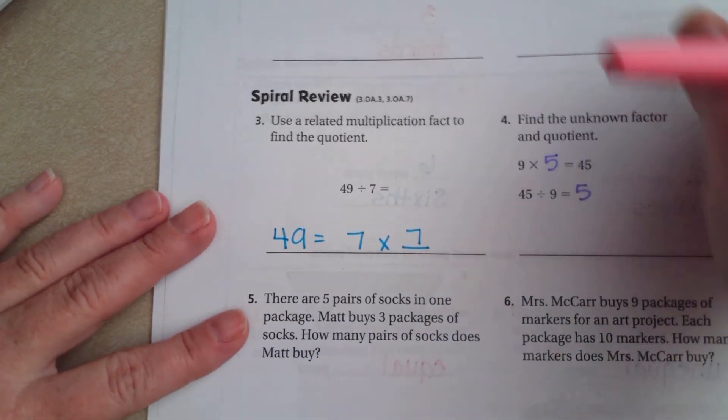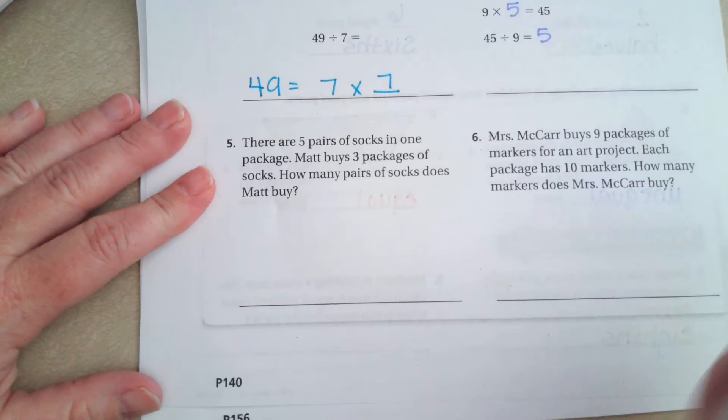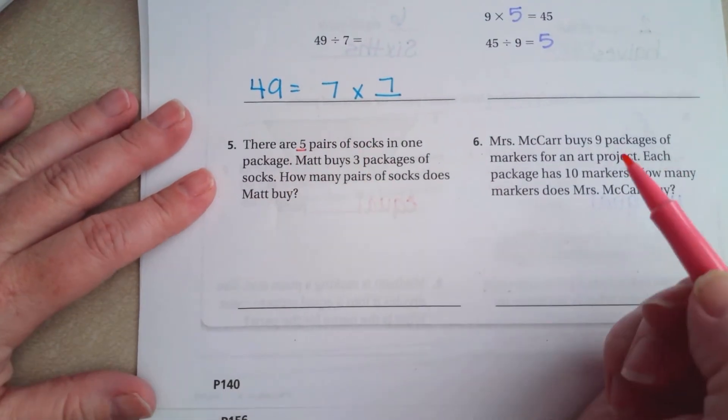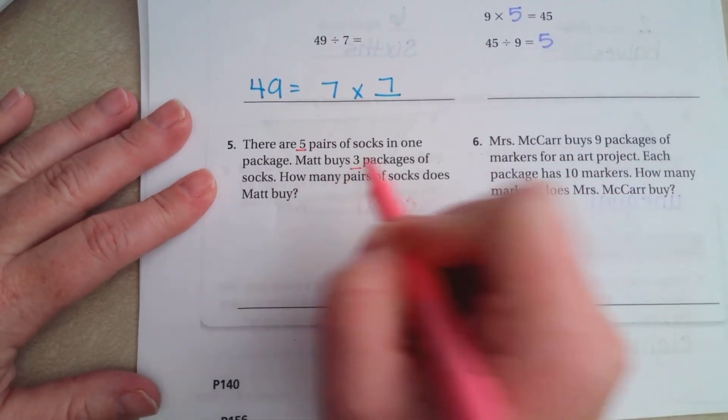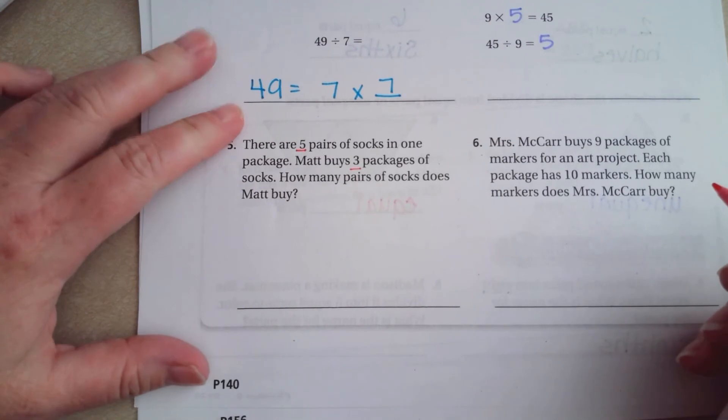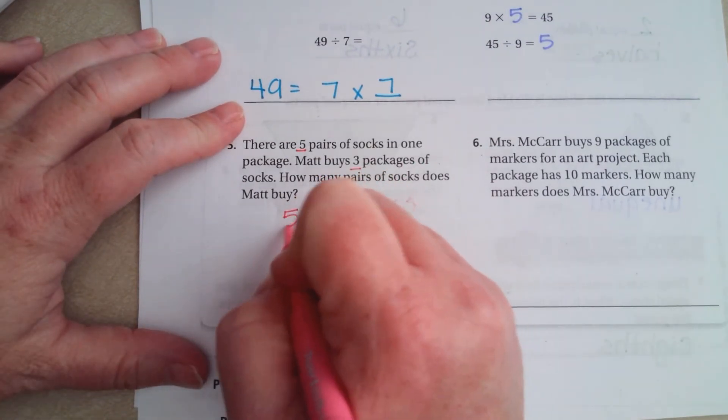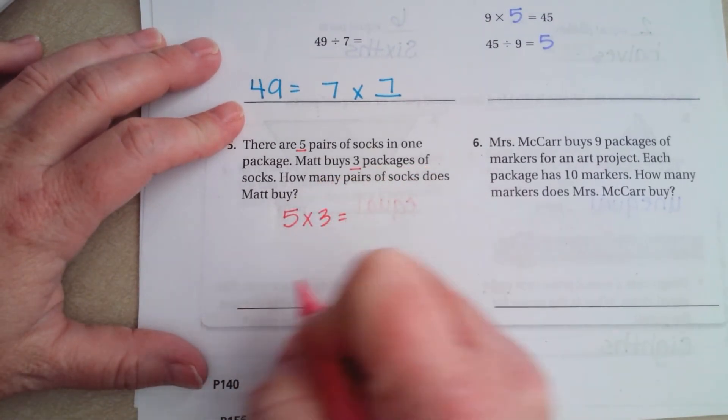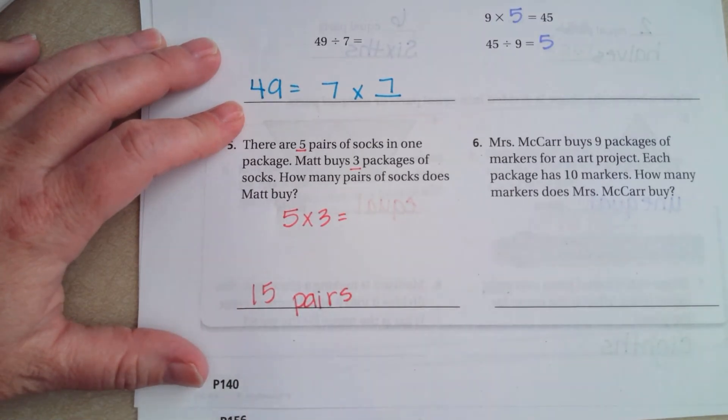There are five pairs of socks in one package. Matt buys three packages of socks. How many pairs of socks does Matt buy? Well, five times three. That's 15 pairs.